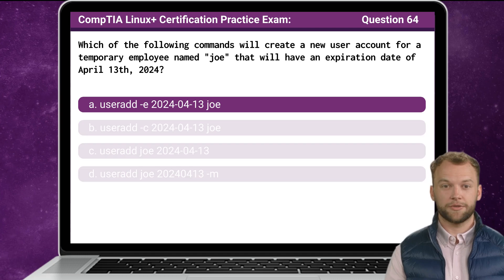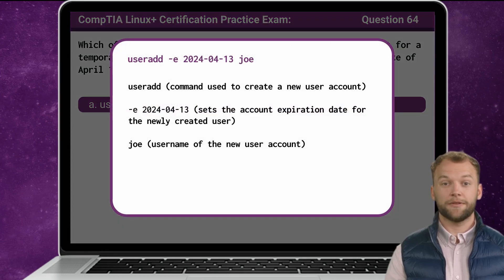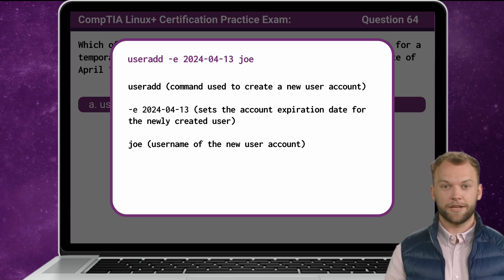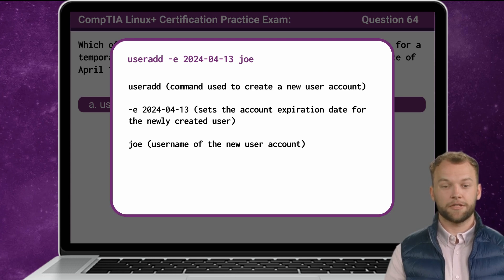The answer is A. useradd is the primary command used to create a new user account. The -e option is used to specify the account expiration date. In this case, 2024-04-13 represents the date April 13th, 2024. Last, we have Joe — this is the username of the new user account being created.